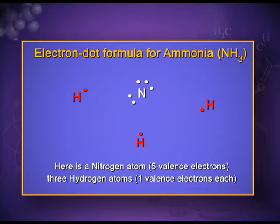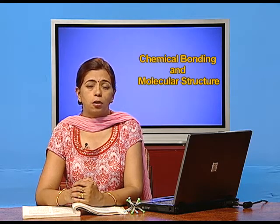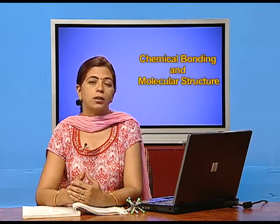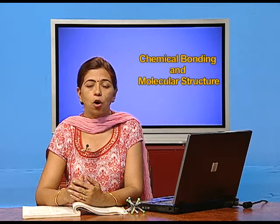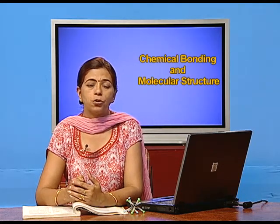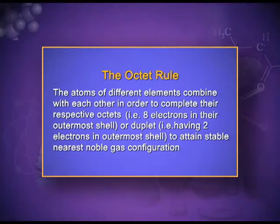This is an example of ammonia. In ammonia also, nitrogen will complete its octet and hydrogen will complete its duplet. Now the octet rule: from these many examples, it is clear that completing the octet is the most stable state. The noble gases have their octet complete, and all other elements enter into this most stable state. The octet rule states that atoms of different elements combine with each other in order to complete their respective octets — that is, eight electrons in the outermost shell — or duplet (two electrons in the outermost shell) to attain the stable nearest noble gas configuration.